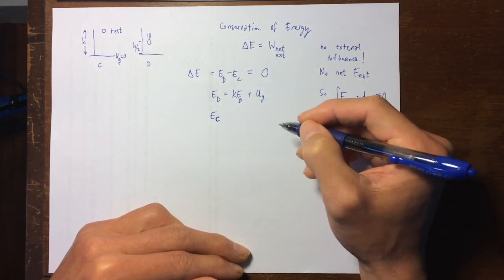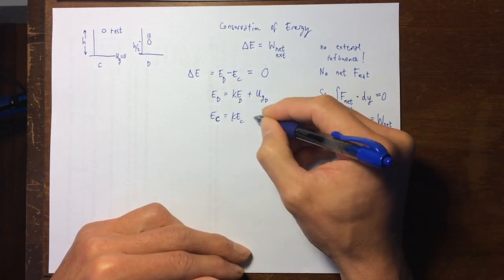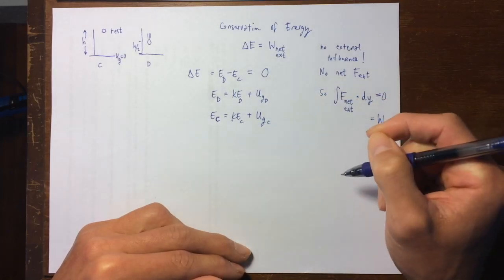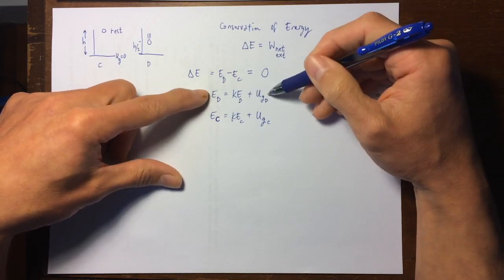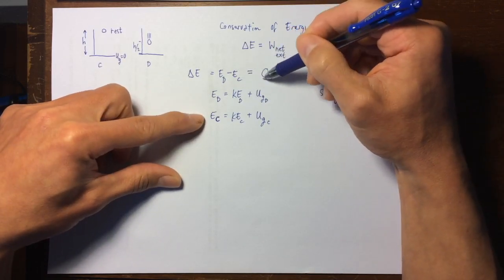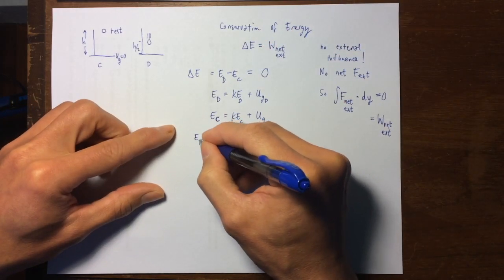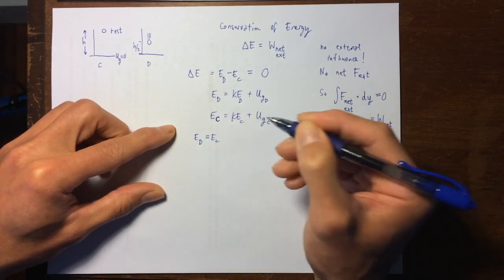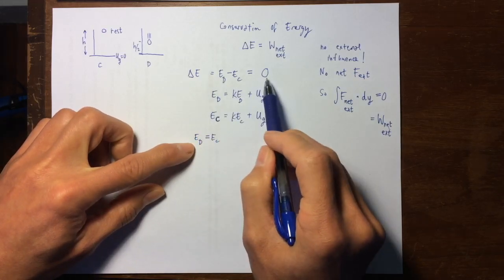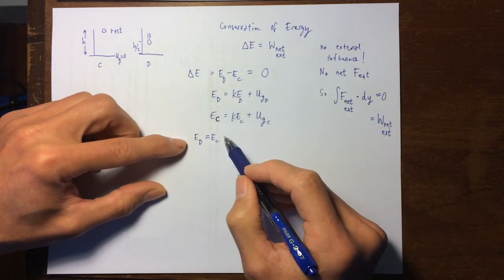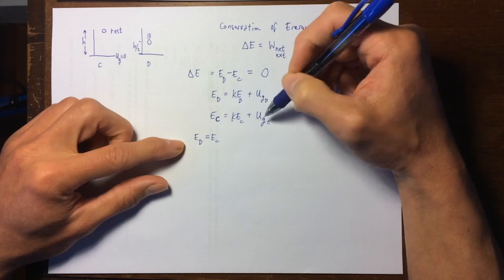So ED includes kinetic energy at D plus gravitational potential energy at D, and EC includes kinetic energy at C plus gravitational potential energy at C. The conservation of energy tells me that ED and EC cannot have a difference — the difference is zero, so ED equals EC. We can use this to conclude something about the kinetic and potential energies.